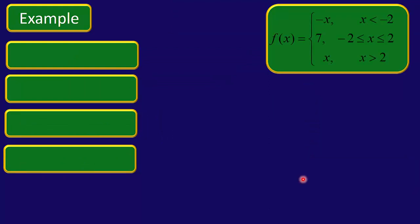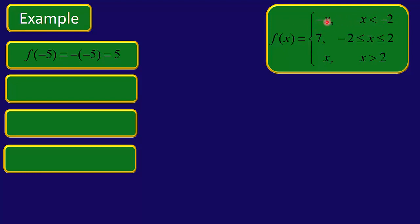Piecewise functions don't have to just have two parts — they can have more than two parts, there's no limit. Look at this one: f of x equals negative x as long as x is less than negative 2; f of x equals 7 as long as x is between negative 2 and 2 inclusive; and f of x equals x as long as x is bigger than 2. So we've got the number line divided into three parts. For f of negative 5 — that's definitely in the first category since negative 5 is less than negative 2 — we put in negative 5 for x. There's already a negative in front, so that gives us 5.